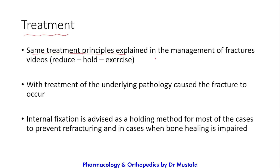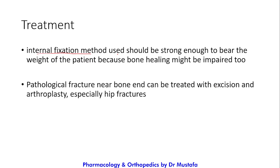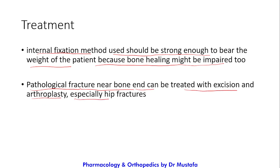Treatment of pathological fractures follows the same principles of fracture management: reduce, hold, and exercise, along with treatment of the underlying pathology that caused the fracture. Internal fixation is advised as the holding method for most cases to prevent re-fracturing. In cases where bone healing is impaired, the fixation method must be strong enough to bear the patient's weight. Pathological fractures near a bone end can be treated with excision and arthroplasty, especially for hip fractures.